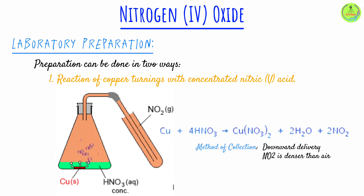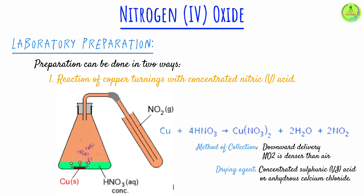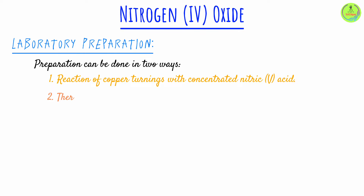If you need to collect dry NO₂ gas, you can pass it through a drying agent — either concentrated sulfuric acid or anhydrous calcium chloride will serve the purpose. A point to note: you cannot use calcium oxide as a drying agent in this case, because calcium oxide is basic and nitrogen dioxide is an acidic gas, so these two will react with one another, which defeats your purpose. So calcium oxide is a no-no.